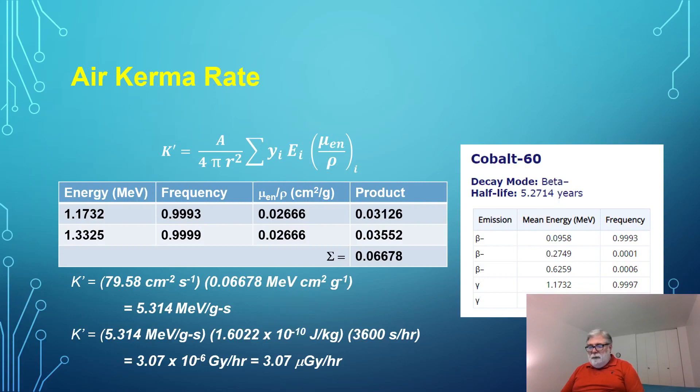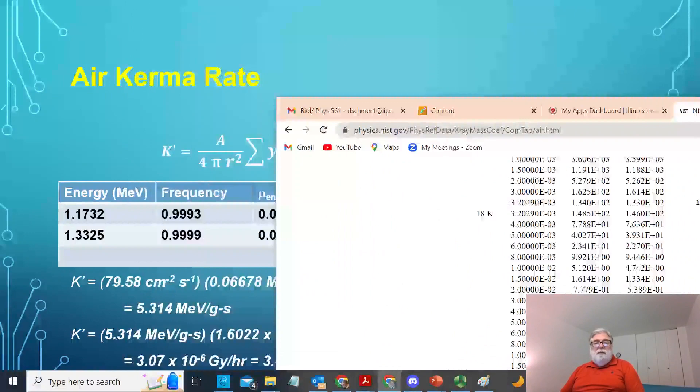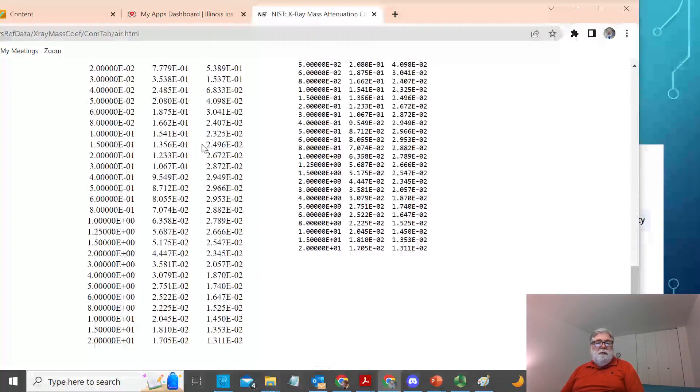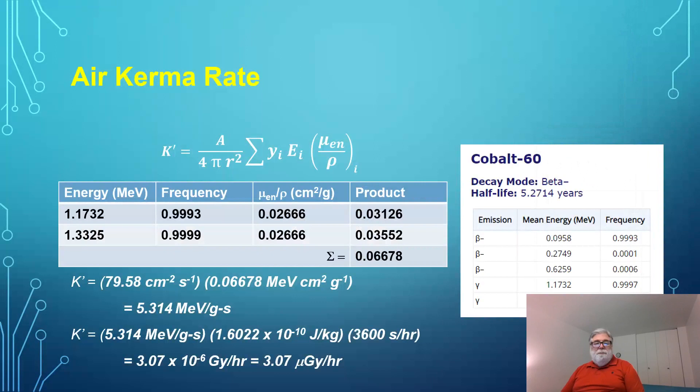Mu_en over rho we got from the NIST website. Let me pull it up. This is for air, and we're talking about energy of 1.25 MeV. The energy absorption coefficient is 2.66 times 10 to the minus 2.